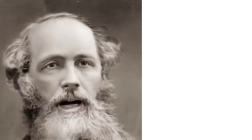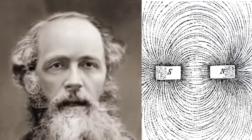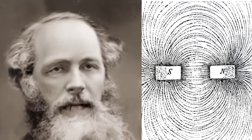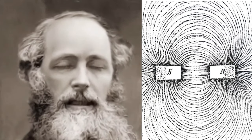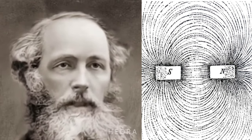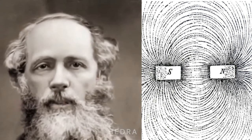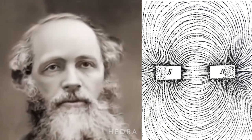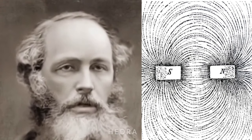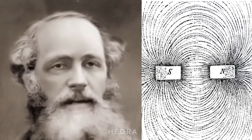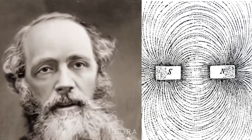Thus, if we strew iron filings on paper near a magnet, each filing will be magnetised by induction and the consecutive filings will unite by their opposite poles so as to form fibres, and these fibres will indicate the direction of the lines of force. The beautiful illustration of the presence of magnetic force afforded by this experiment naturally tends to make us think of the lines of force as something real, and as indicating something more than the mere resultant of two forces whose seat of action is at a distance, and which do not exist there at all until a magnet is placed in that part of the field.